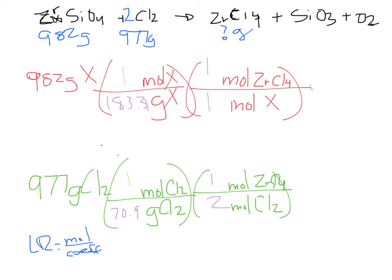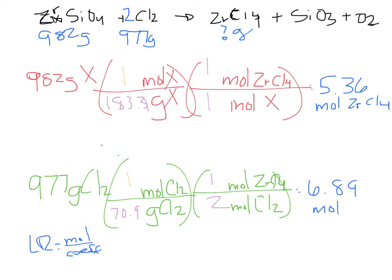That's 183.31. Now where does the mole-to-mole ratio come from? The coefficients. So the top one — what is your mole-to-mole? One over one. And the bottom one? One over two. So let's run this math: 982 divided by 183.31 gives me 5.36 moles of ZrCl₄. The bottom one is 977 divided by 70.9 times 2, which gives us 6.89 moles of ZrCl₄.